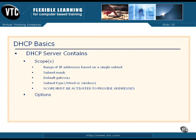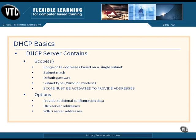You can also set options on a scope — this is where you provide additional configuration data such as DNS server addresses, WINS server addresses, and so forth. There are actually over 60 options you can hand out along with the basic DHCP information. That covers the basics of DHCP. In upcoming videos we'll set up the role and look at options, classes, exclusions, and reservations to get you well-rounded on DHCP.